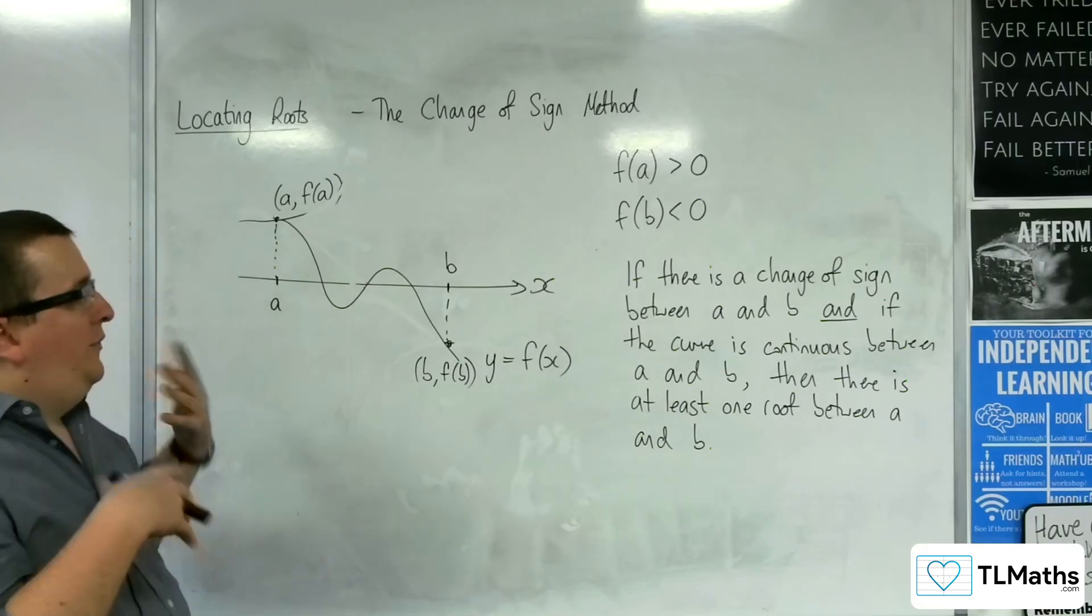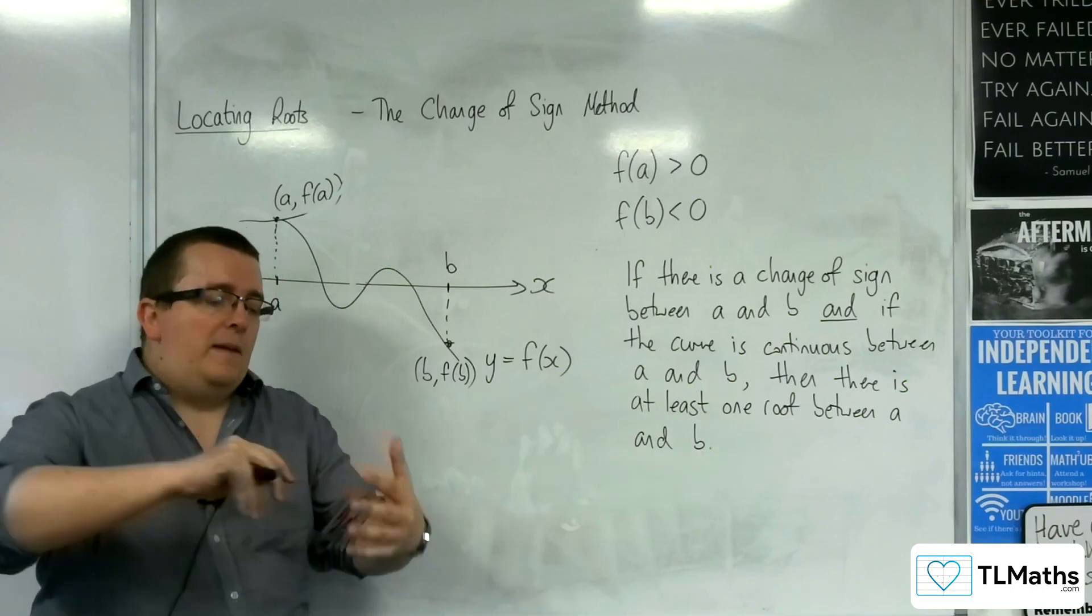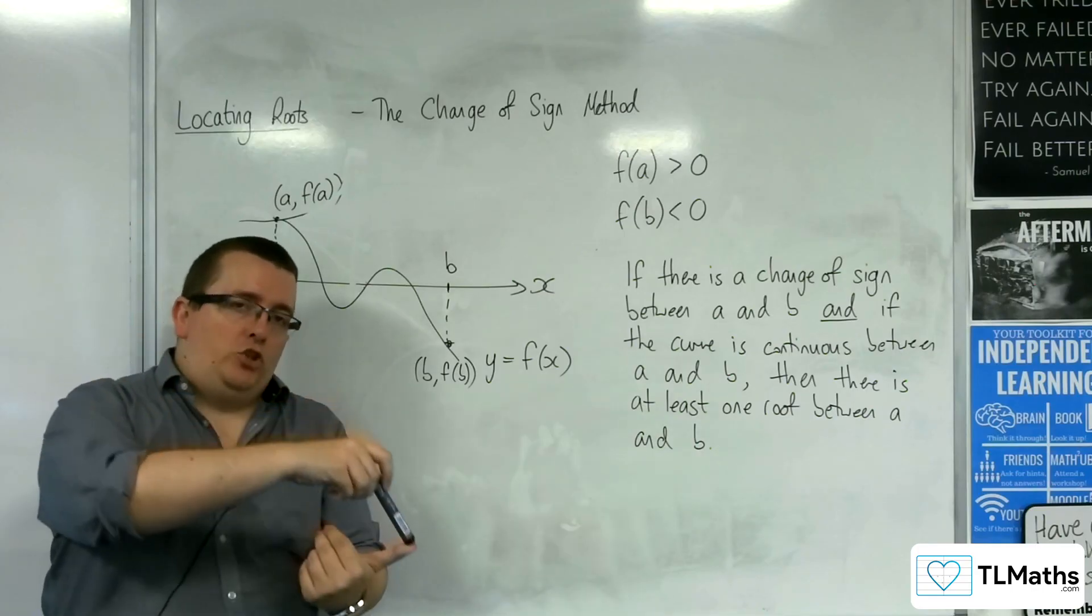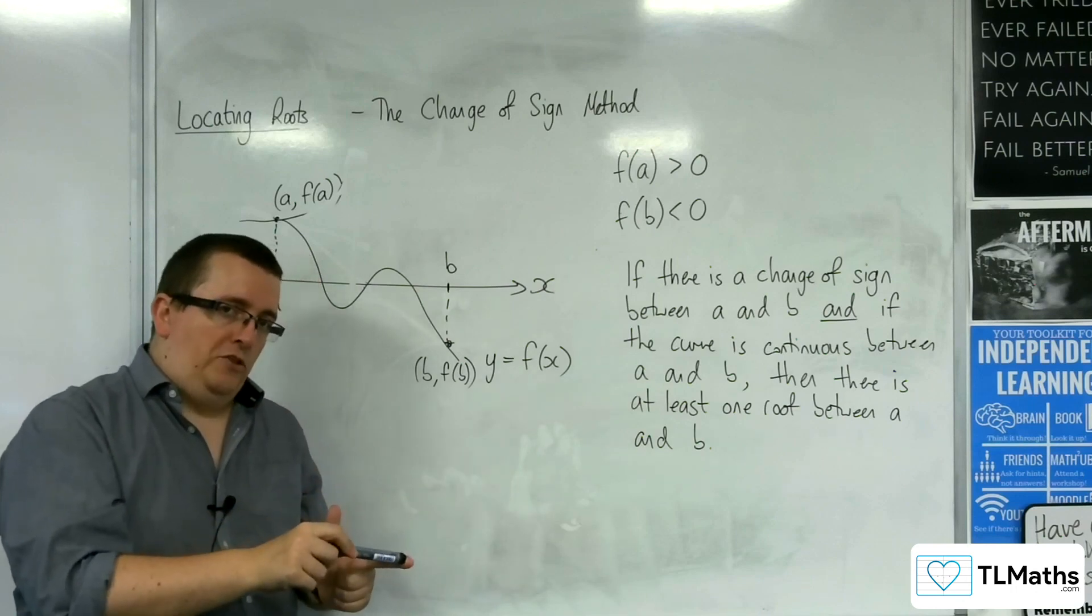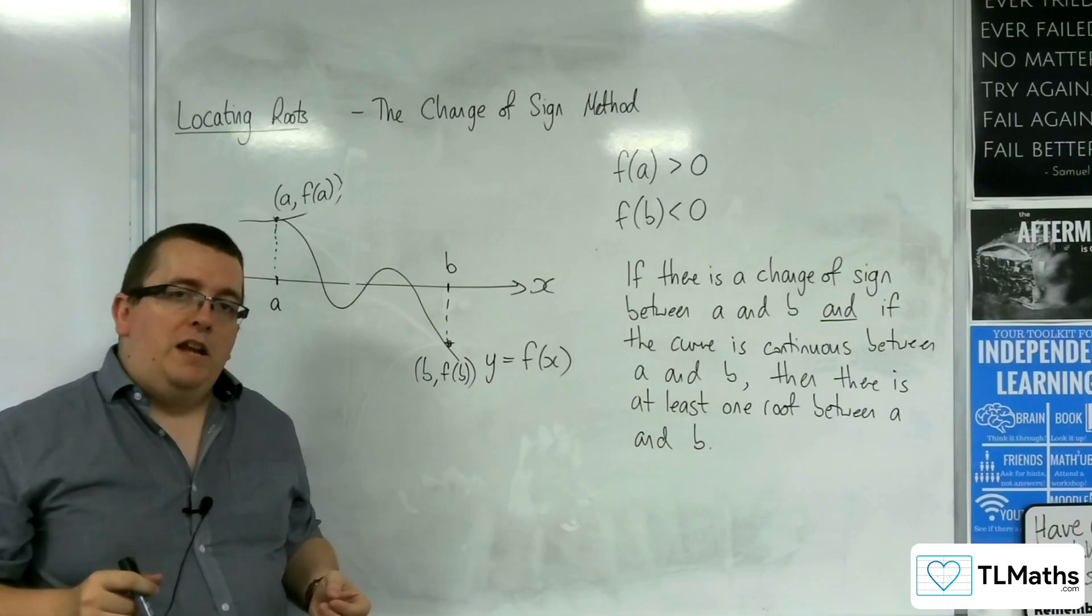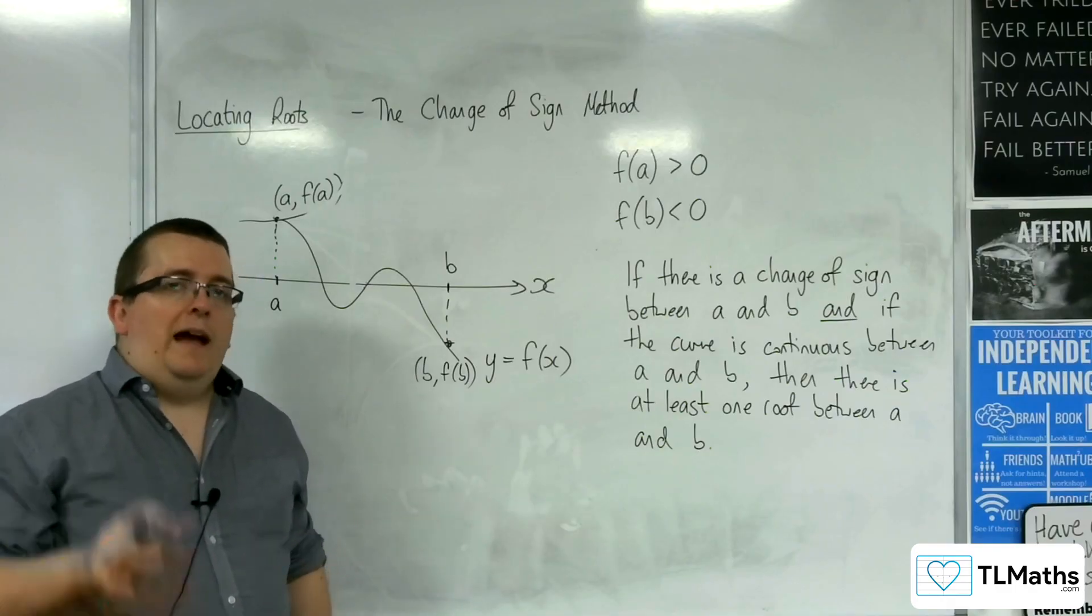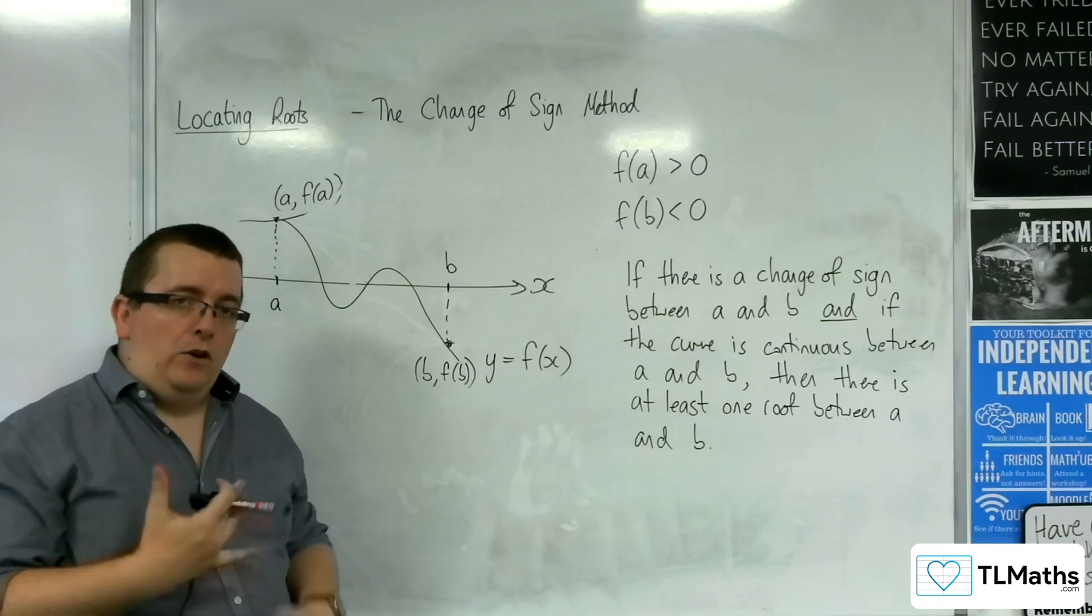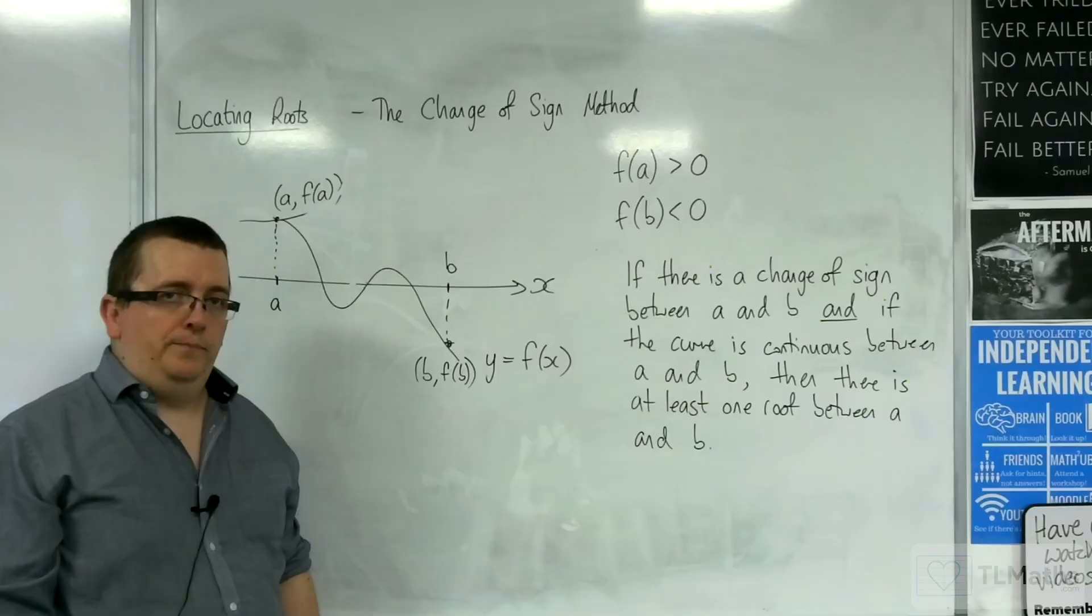So this is the change of sign method in action. The idea being that if there's a change of sign and the curve is continuous between those two points, then I know that there is at least one root there. And we're going to see some examples of how this really works, a little bit more information on this in the coming videos.